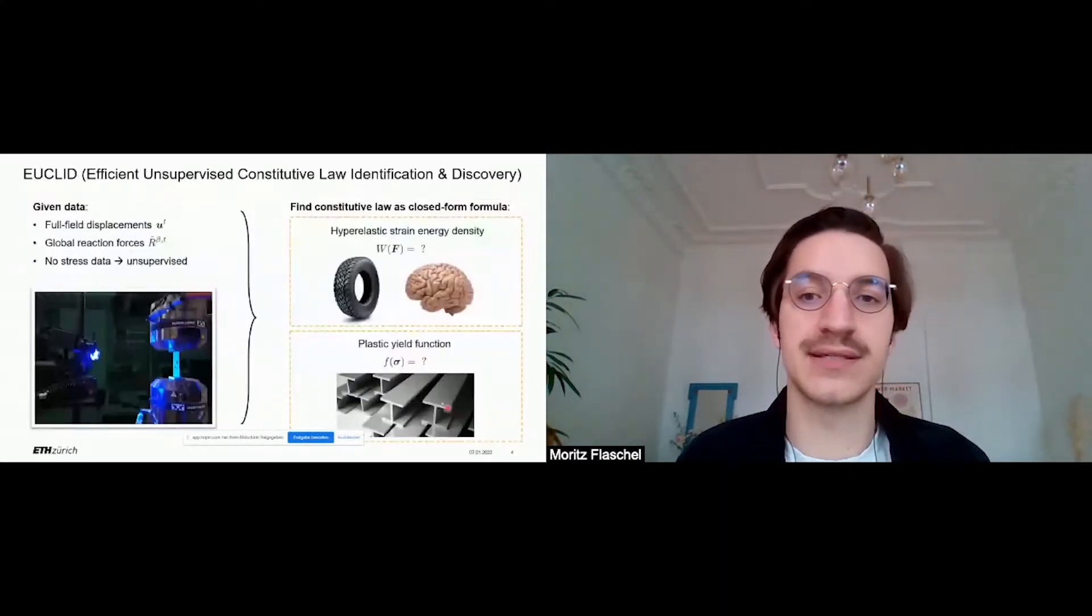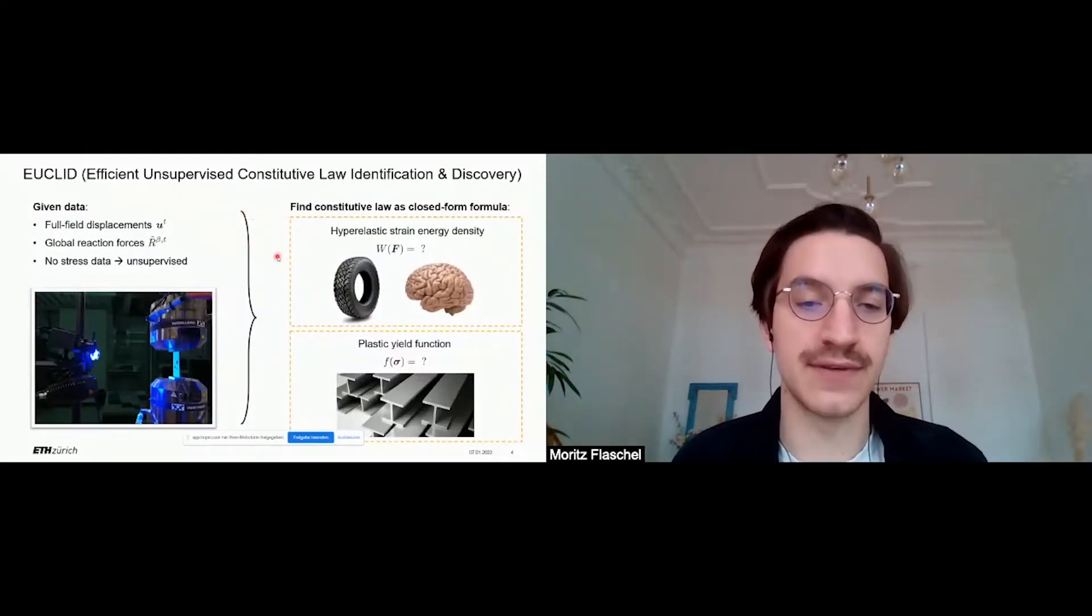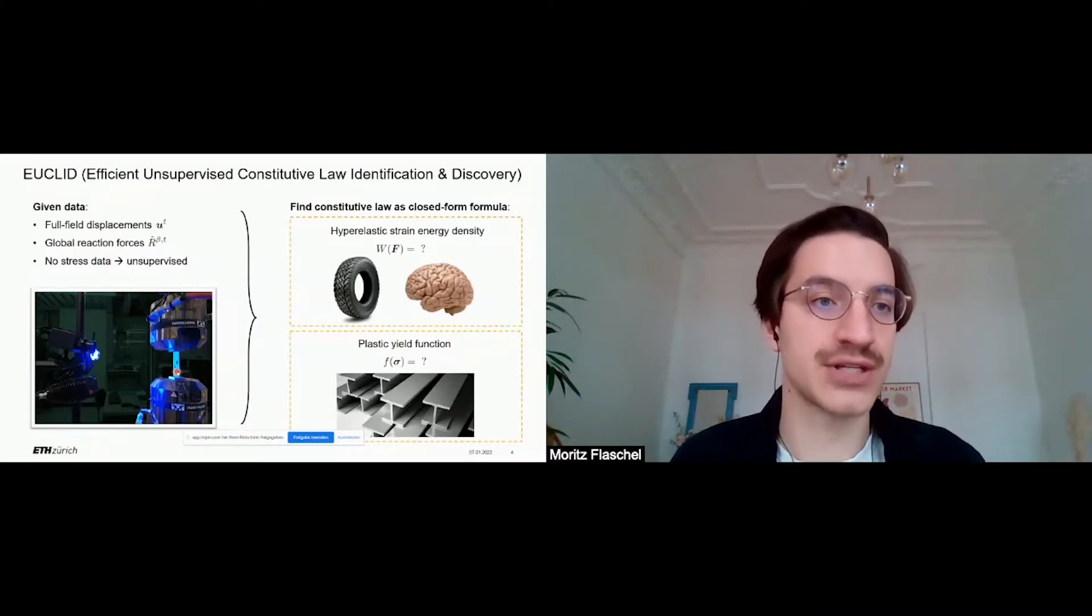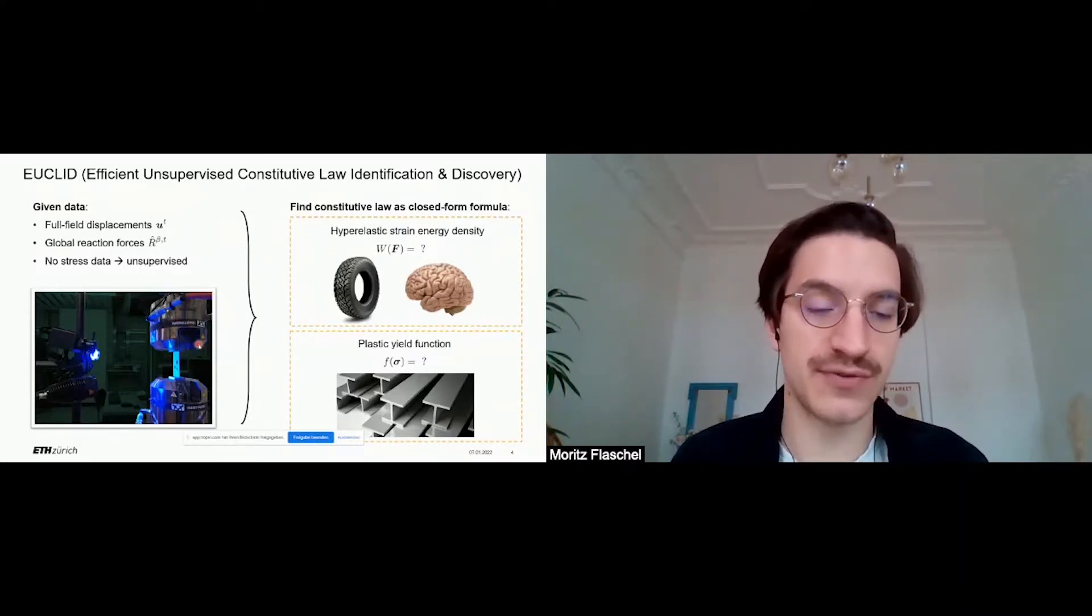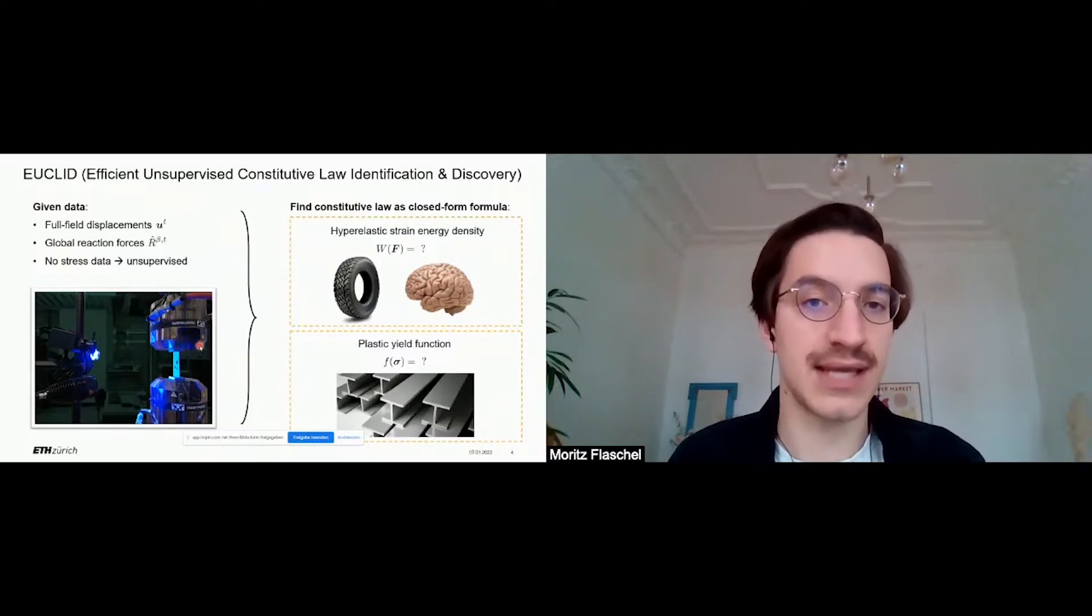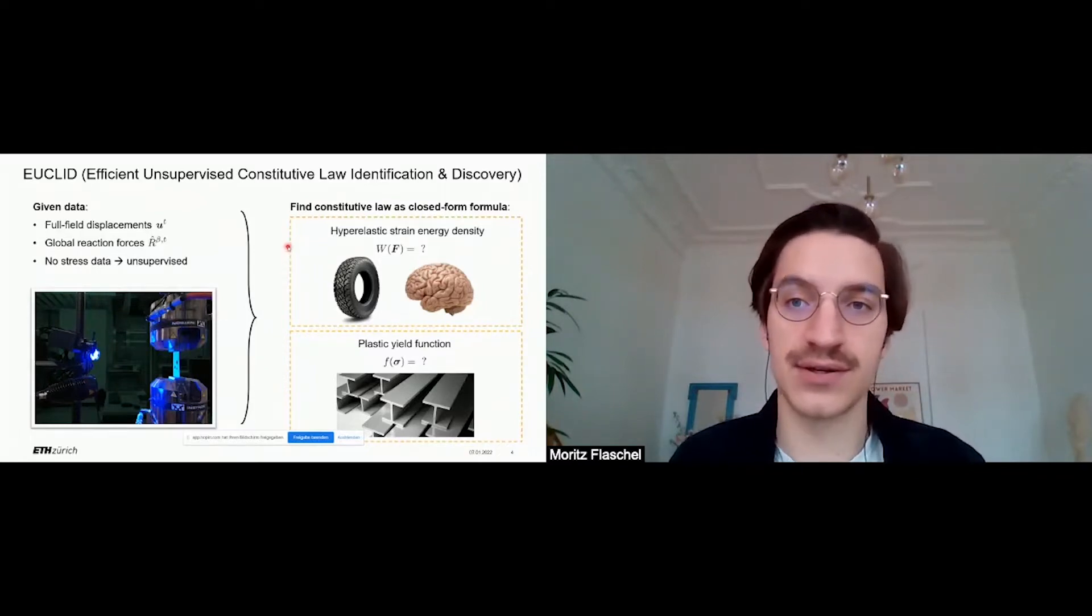For these reasons, we proposed a method that we named EUCLID, standing for Efficient Unsupervised Constitutive Law Identification and Discovery. The objective of EUCLID is to run a deformation experiment of a given material and to measure the full field displacements, for example, by applying digital image correlation, and to further measure the reaction forces, and based on these data to find constitutive laws as closed-form mathematical expressions.